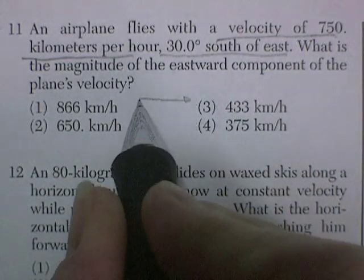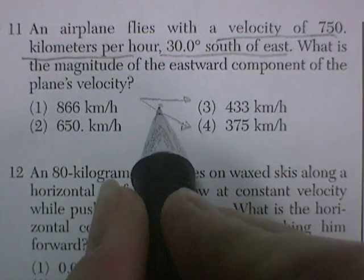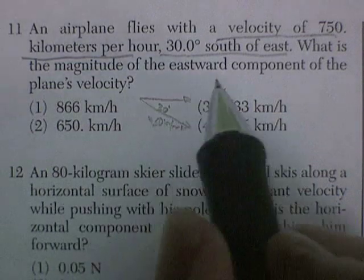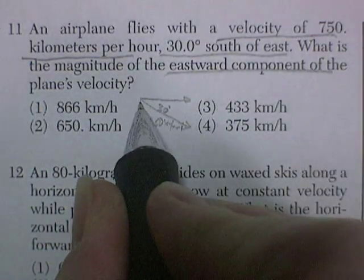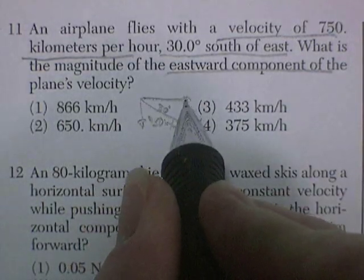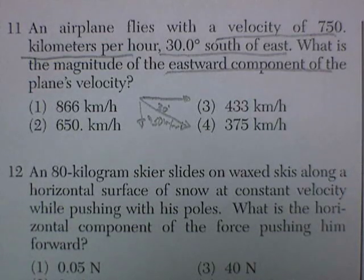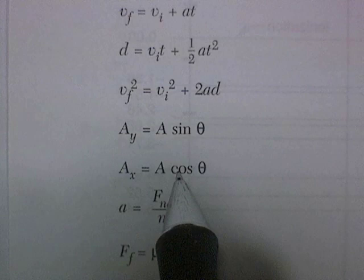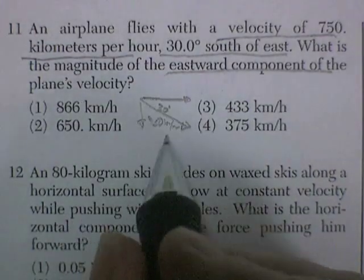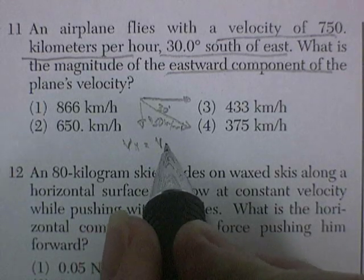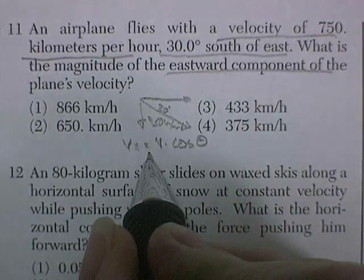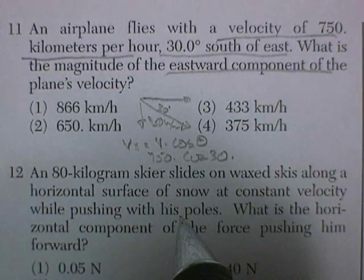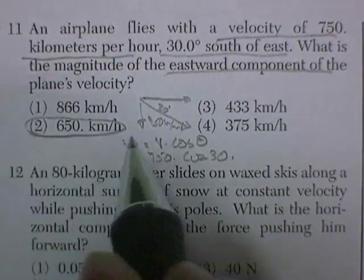So that means if it was going east, it's really going 30 degrees south of east at 750 km per hour. The magnitude of the eastward component — part of its velocity is carrying it south, part of its velocity is carrying it east. It's the x component that's carrying it east. So I've got this formula that says any vector's x component is equal to the vector times the cosine of the angle. So the velocity in the x is going to be equal to the velocity times the cosine of the angle: 750 times the cosine of 30 degrees. Cosine of 30 is 0.8-something, times 750 — that's going to get us up to 650 km per hour eastwards.